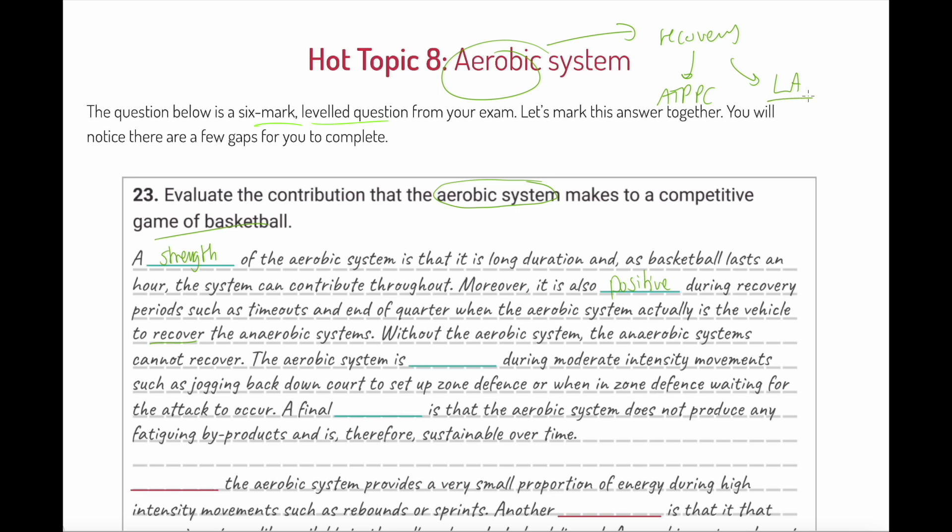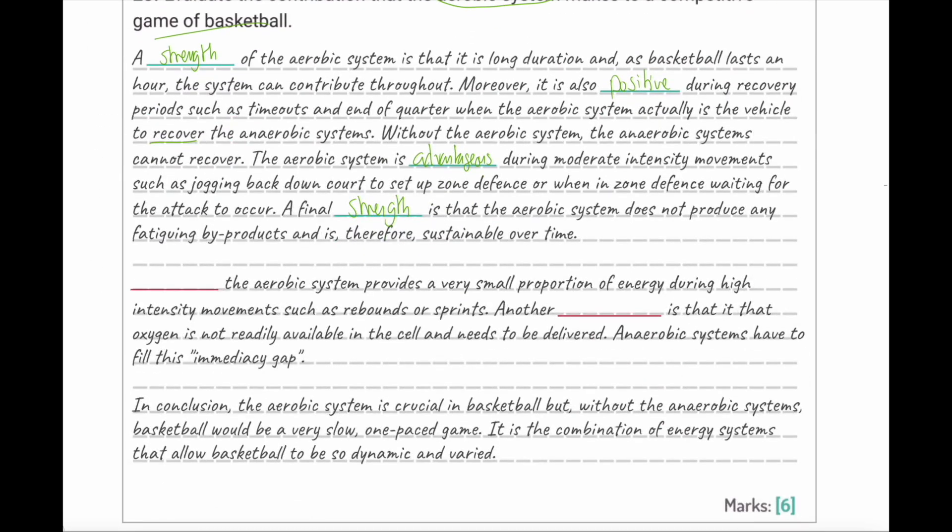Notice the key words: a strength, a positive. Without the aerobic system, the anaerobic systems cannot recover. The aerobic system is advantageous during moderate intensity movements such as jogging back down court to set up zone defense. A final strength is that the aerobic system does not produce any fatigue byproducts and is therefore sustainable. It doesn't produce lactic acid, therefore it's sustainable over time.